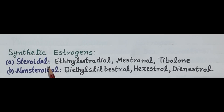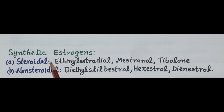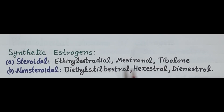Let's now classify synthetic estrogens. Synthetic estrogens are of two types: steroidal estrogens, which possess a steroidal ring in their chemical structure, and non-steroidal estrogens, which exhibit a non-steroidal chemical structure. Examples of steroidal estrogens include ethinyl estradiol, mestranol, and tibolone.